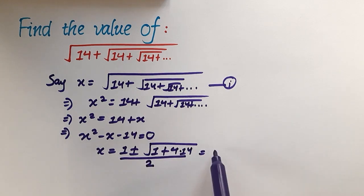This gives us 1 plus minus under root 57 over 2. So this gives us two possible values for x.